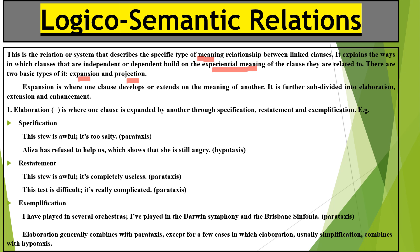Expansion is where one clause develops or extends on the meaning of another — where we try to add something through another clause. It is further subdivided into elaboration, extension, and enhancement. In elaboration, when you expand a clause to another through specification, you specify in the second clause what you have mentioned earlier, or you restate or exemplify it. Example: 'This stew is awful — it's too salty.' Here the second clause specifies why the stew was considered awful.